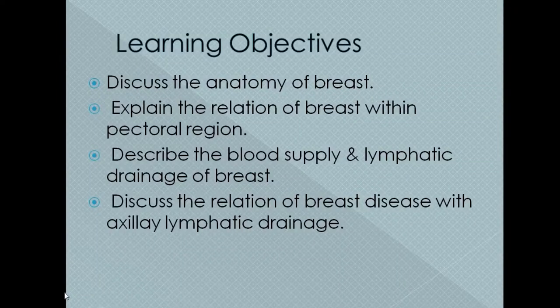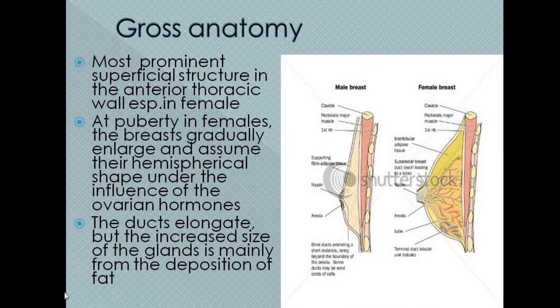This lecture covers the pectoral region, blood supply, lymphatic drainage, and diseases associated with the lymphatic drainage of the breast. The breast is the most prominent and superficial structure present in the anterior chest wall. It is especially prominent in the female at puberty and becomes enlarged during pregnancy and lactation due to proliferation of the glandular parenchyma of the mammary gland present in the breast.